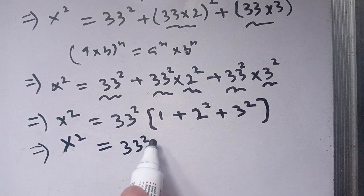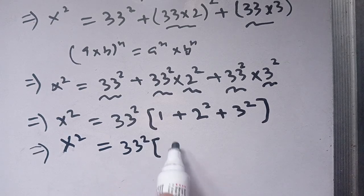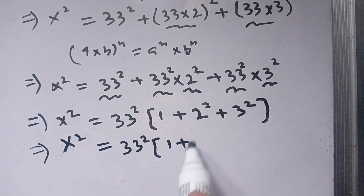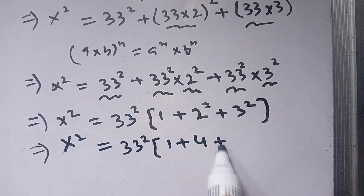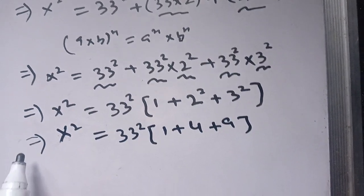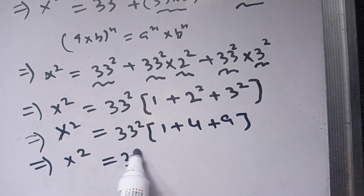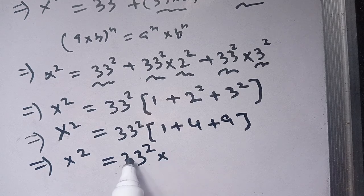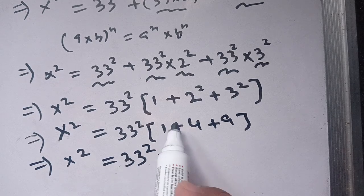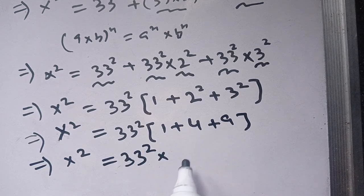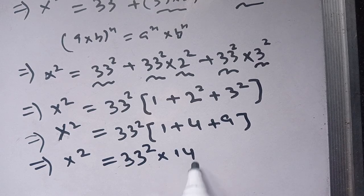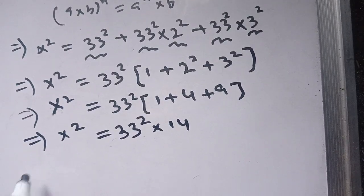Now we have x squared is equal to 33 squared times — here 1 plus 2 squared is 4, plus 3 squared is 9 — which becomes 1 plus 4 plus 9, giving us 14. So x squared is equal to 33 squared times 14.